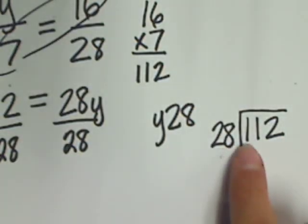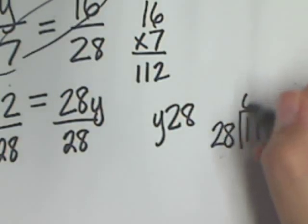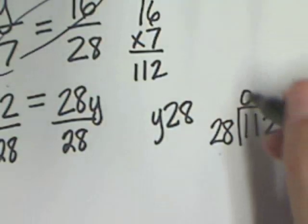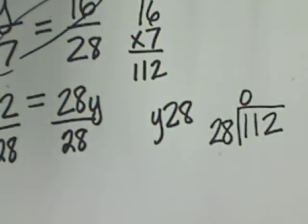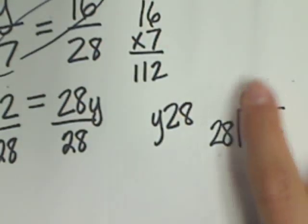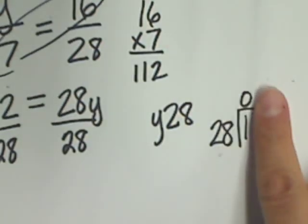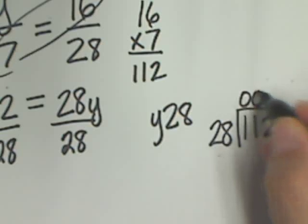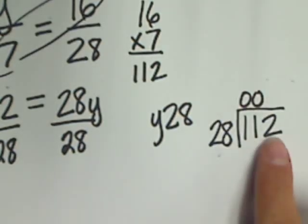28 goes into 1 how many times? Zero. And I know that some of you think that this is a waste of time putting those zeros. But if I could tell you how many times I see people put answers like 4 right here, I go, well, you just told me that 28 goes into 1 four times if there's the 4 right above that. Oh, really? So, put the zeros. I think it helps the most of you. 28 into 11? Zero. Now, 28 into 112.